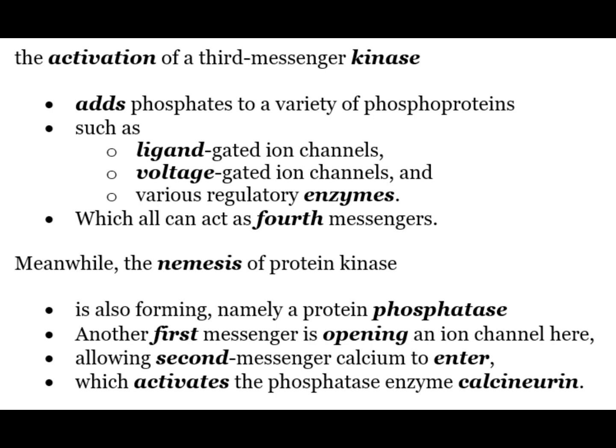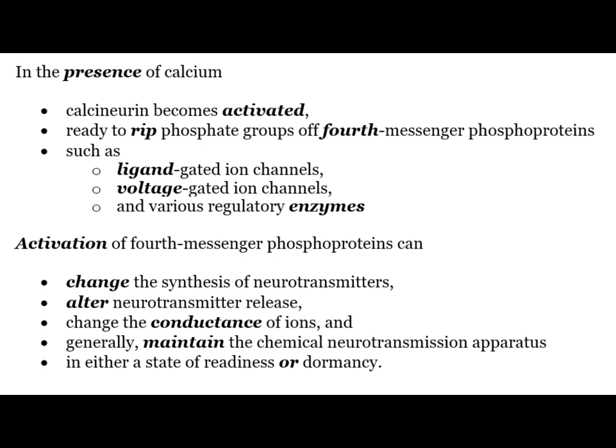Meanwhile, the nemesis of protein kinase is also forming, namely a protein phosphatase. Another first messenger opens an ion channel, allowing second messenger calcium to enter, which activates the phosphatase enzyme calcineurin. In the presence of calcium, calcineurin becomes activated and is ready to remove phosphate groups from fourth messenger phosphoproteins such as ligand gated ion channels, voltage gated ion channels and various regulatory enzymes.